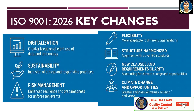Let us have a glance at the key changes. First is digitalization — a greater focus on efficient use of data and technology. Second is sustainability — inclusion of ethical and responsible practices. Third is risk management — enhanced resilience and preparedness for unforeseen events. Fourth is flexibility — more adaptable to different organizations. Fifth is structural harmonized alignment with other ISO standards, including new clauses and requirements.